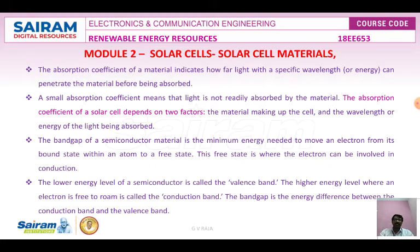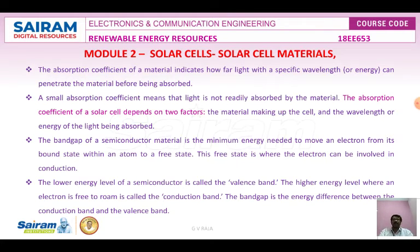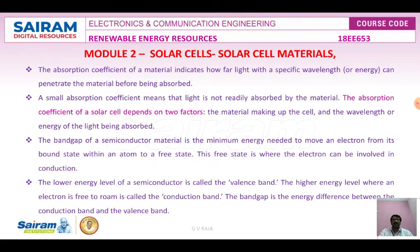The band gap of the semiconductor material — the upper one is the conduction band and the lower one is the valence band. There is 1.5 electron volts required for moving from the valence band to the conduction band, that is the forbidden energy gap. This is the minimum energy needed to move an electron from its bound state within an atom to a free state, where the electrons can be involved in conduction. The lower energy level is called the valence band and the higher energy level where an electron is free to roam is called the conduction band.